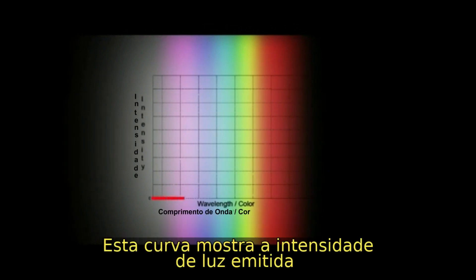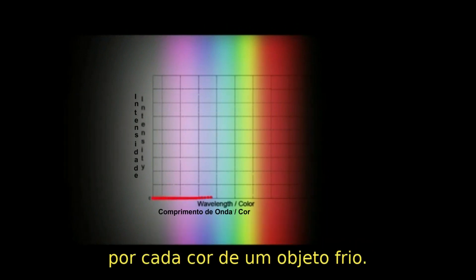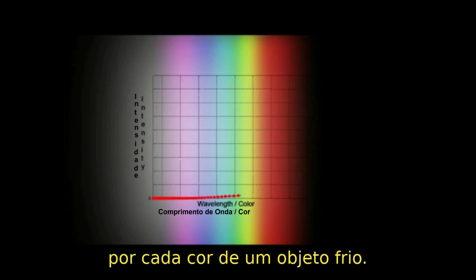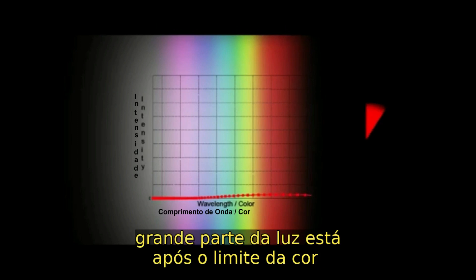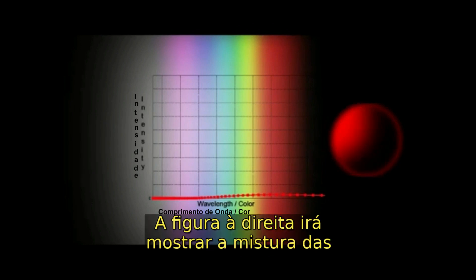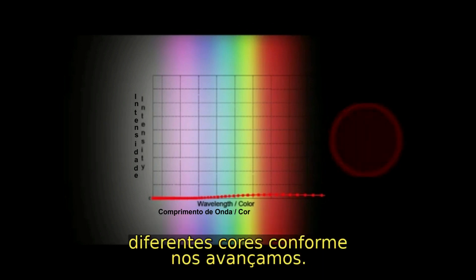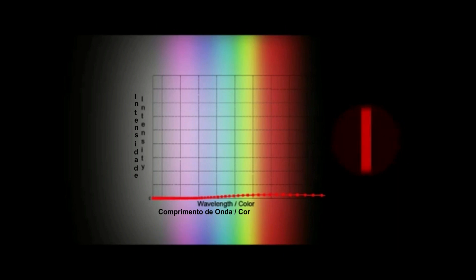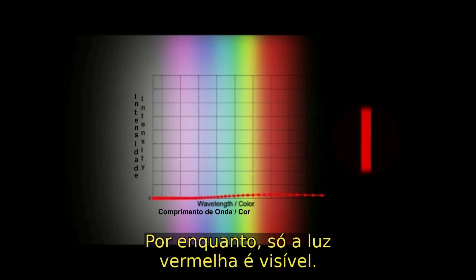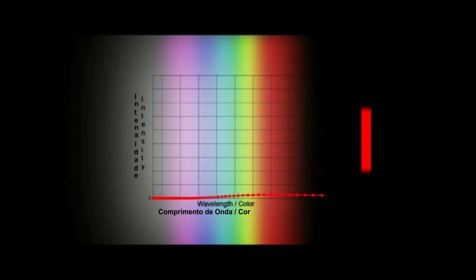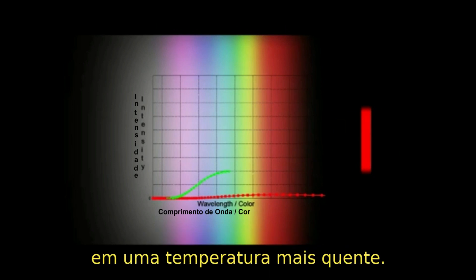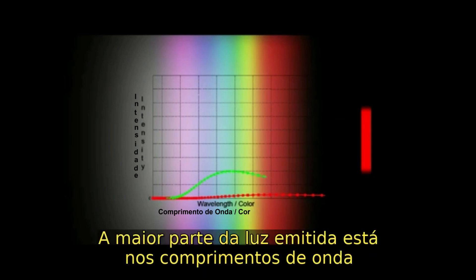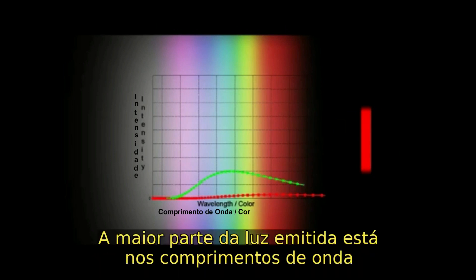This curve shows how much light of each color is emitted by a cool object. As you can see, there isn't much light, and what light there is mostly lies out past the red end of the spectrum in the infrared. The figure on the right will show the different colors added together as we progress. Right now only red light is visible. This next curve shows how much light of each color is emitted by a medium temperature object, and the most light is emitted in the orange, yellow, and green wavelengths.